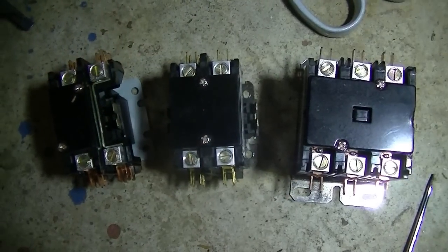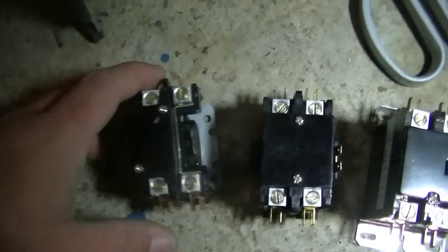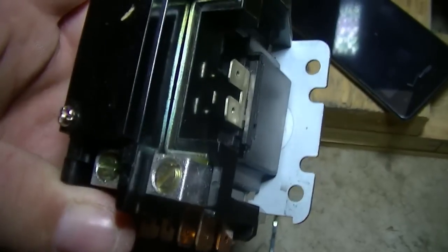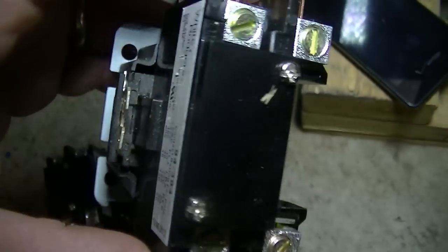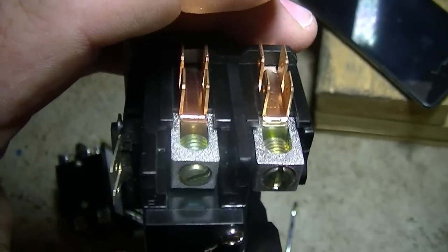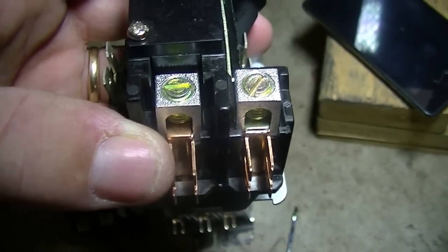For reference, here's an example of a single pole contactor like we've just talked about. The low voltage terminals on the side. This one's White Rodgers. You have terminals on the top and the bottom.